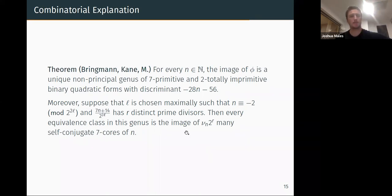Even better, suppose that l is chosen maximally such that the same congruence holds and some number—so here (7m+14)/2^(2l)—has r distinct prime divisors. Then each equivalence class in this genus is the image of a certain number of self-conjugate seven-cores. So this map is really explicit. It tells you if you give me some of your favorite self-conjugate seven-cores, I can tell you the genus that it spits out and I can tell you how many things are in the orbit that map to the same genus and the same equivalence class in the genus.